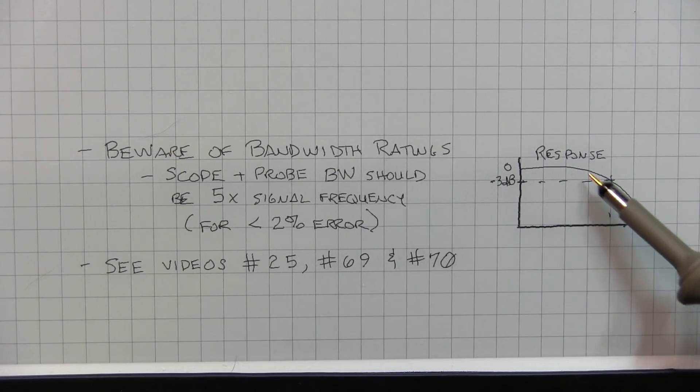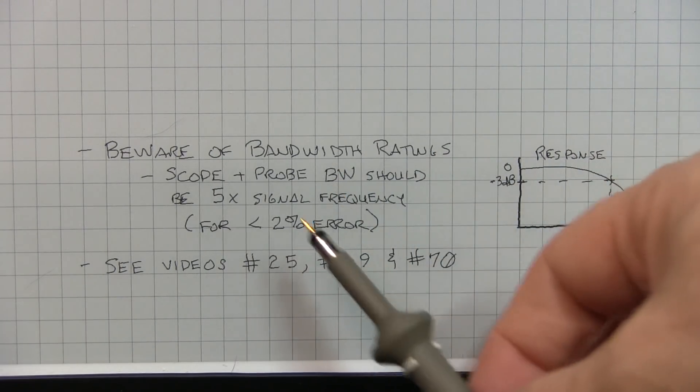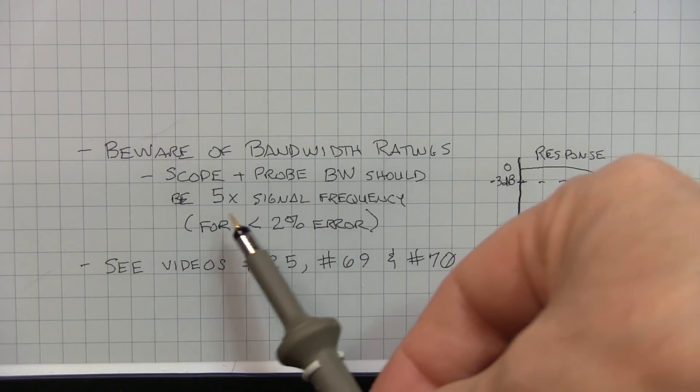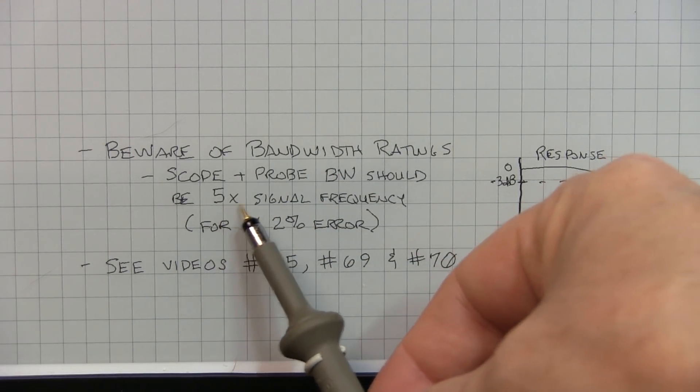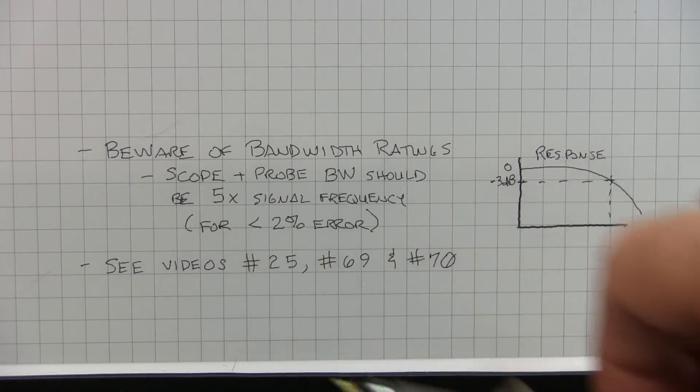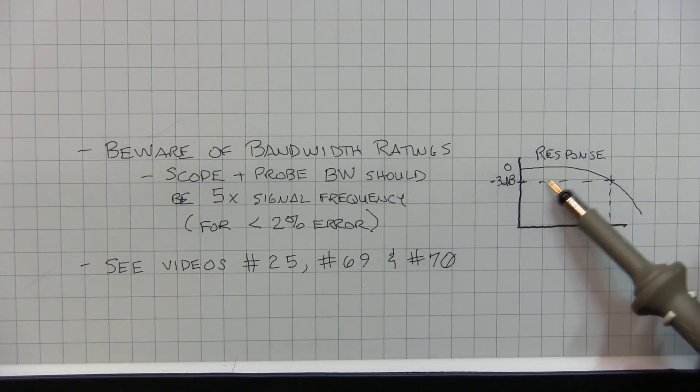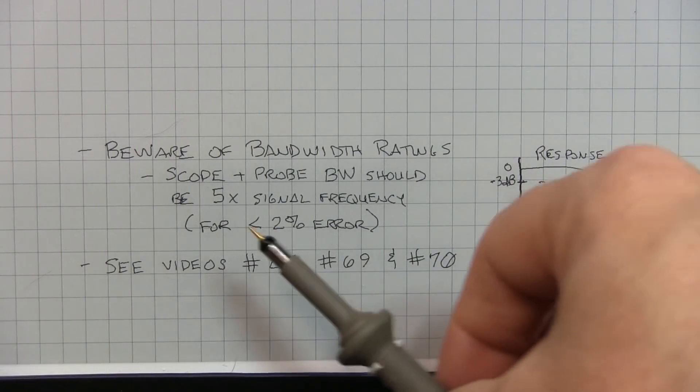So when you start approaching that bandwidth limit, the amplitude response is not going to be at full amplitude. In fact, the old rule of thumb was that the scope and probe bandwidth should exceed the signal frequency by a factor of 5 to give you less than a 2% error. Kind of operate down in this portion of the curve.